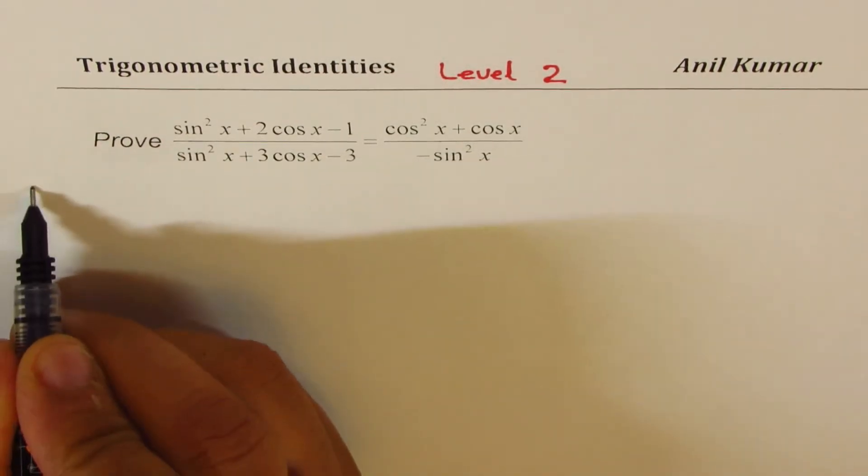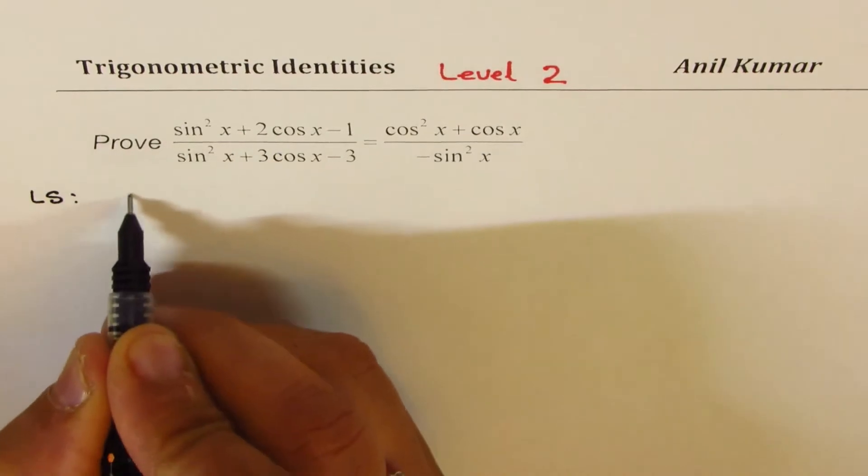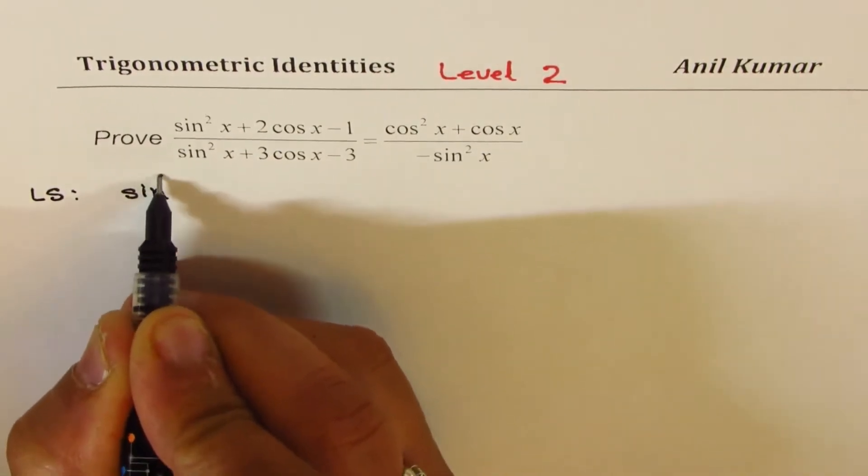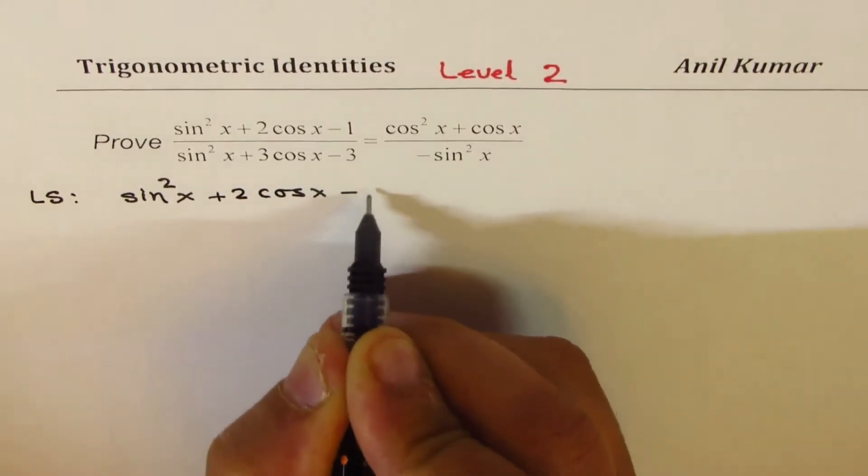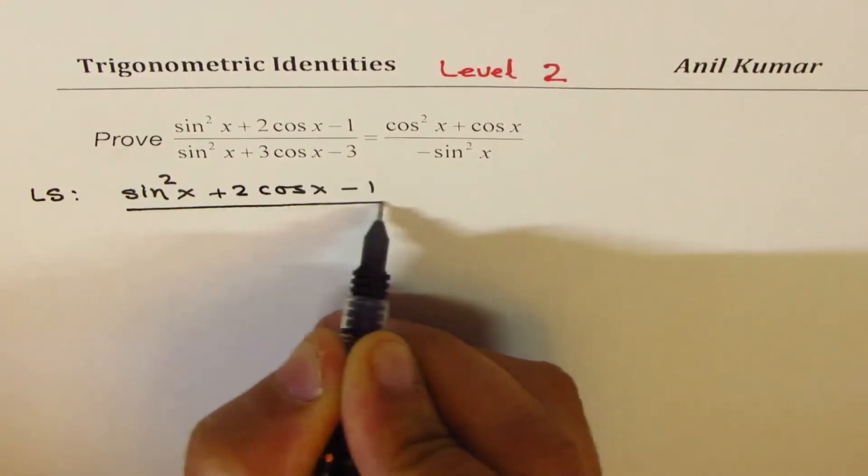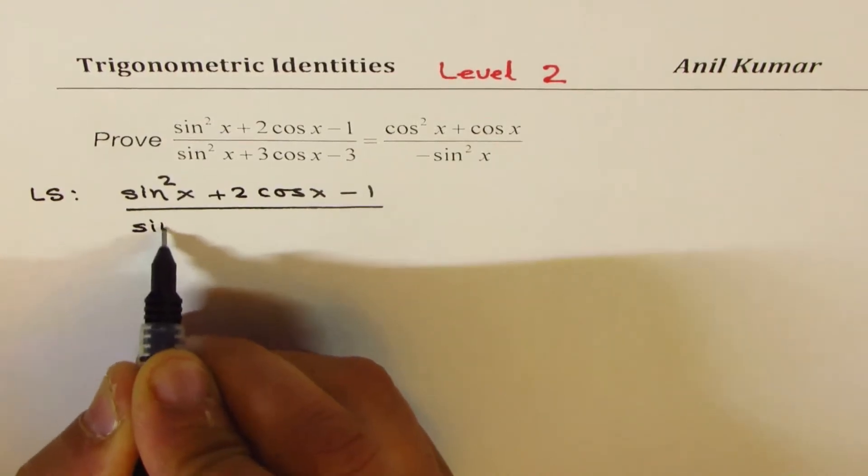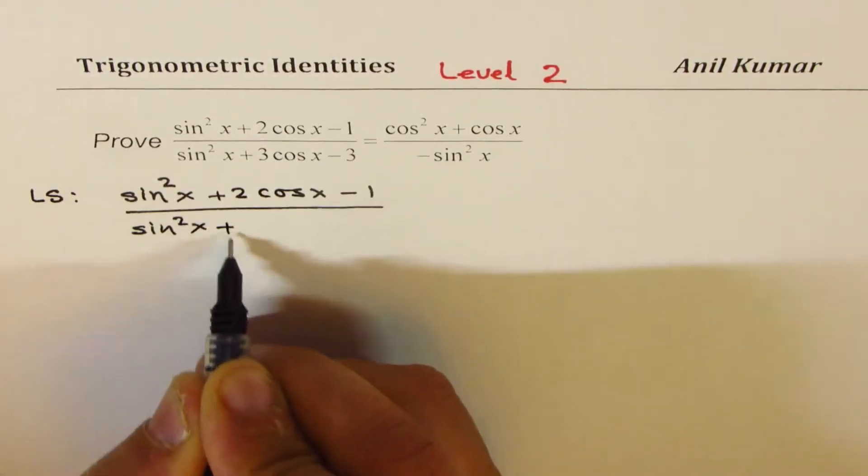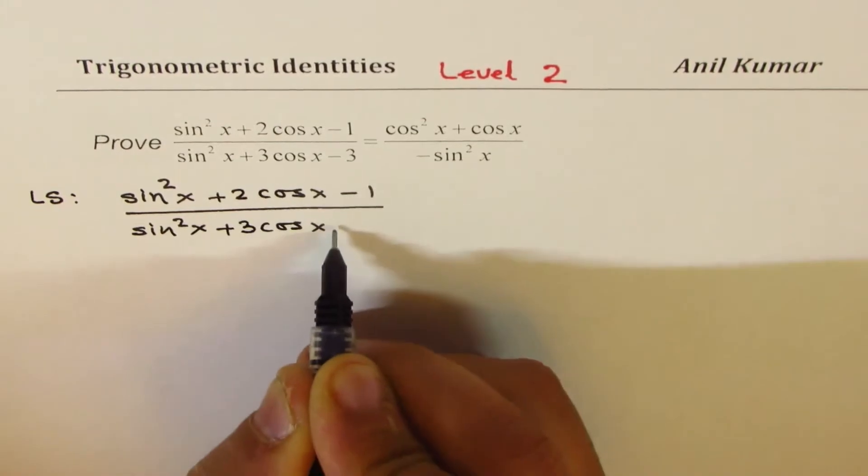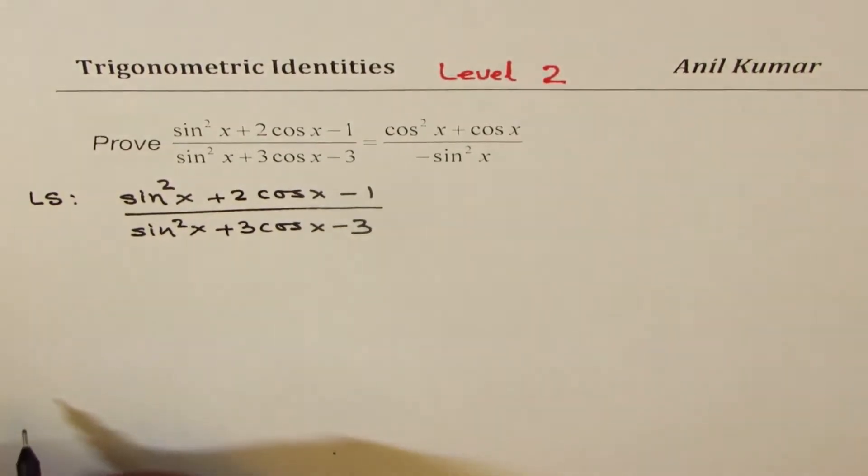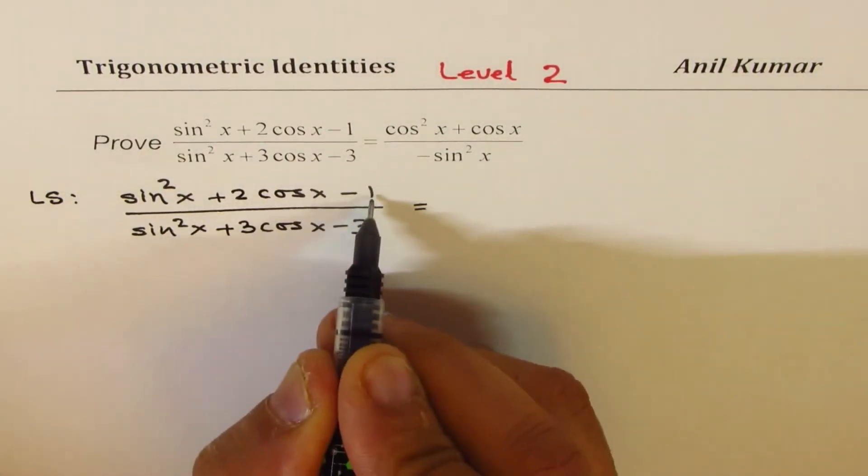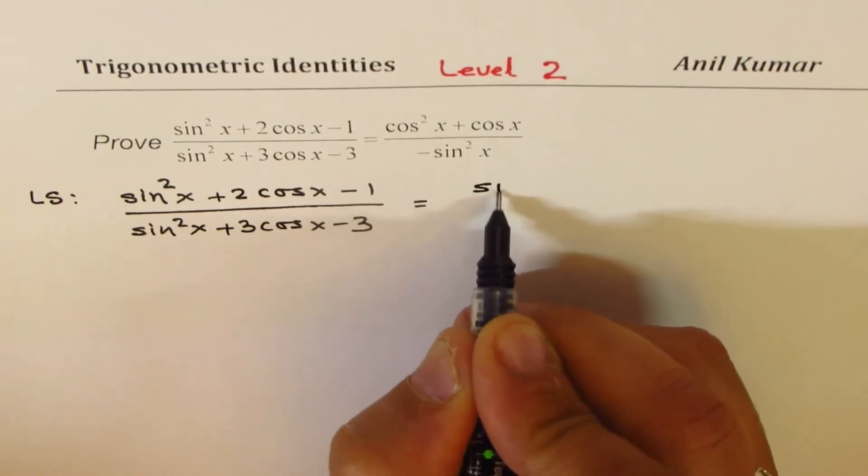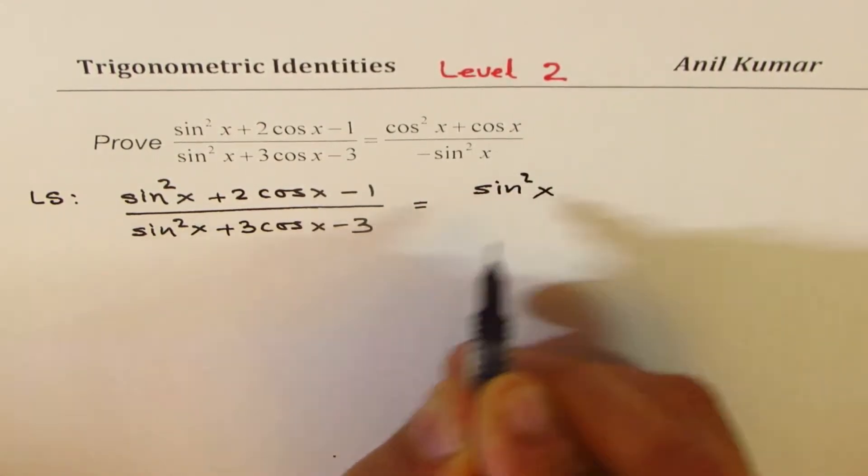Now let's begin from the left side. Let's copy the question. It is sin²x + 2cos x - 1 divided by sin²x + 3cos x - 3. Now we can always write 1 as combination of sin²x + cos²x. So I will replace 1 with sin²x + cos²x.